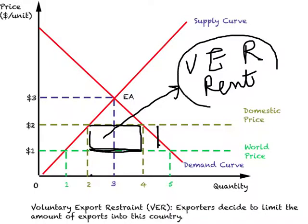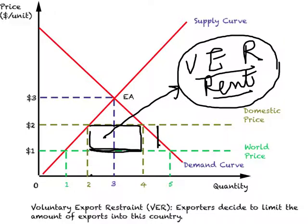Comparing VER rent to quota rent: they are exactly the same amount. However, when we have an import quota, the money accrues to a local business in the importing nation. With VERs, this rent accrues to foreigners — the exporting nation. So from the importing country's perspective, it has lost the VER rent to foreigners in addition to the deadweight loss. Deadweight loss exists under both tariff revenue and quota rent, but with VERs the country also loses the VER rent.